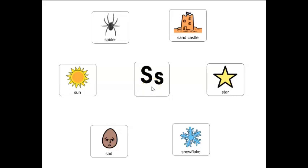Which word that starts with the letter S is an insect with eight legs? Spider. Which word that starts with the letter S is something that falls from the sky when it's very cold outside? Snowflake. Great job, friends!